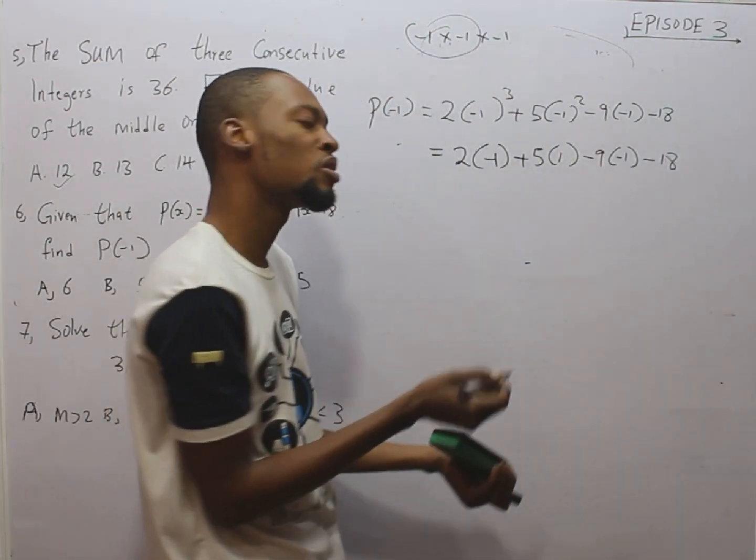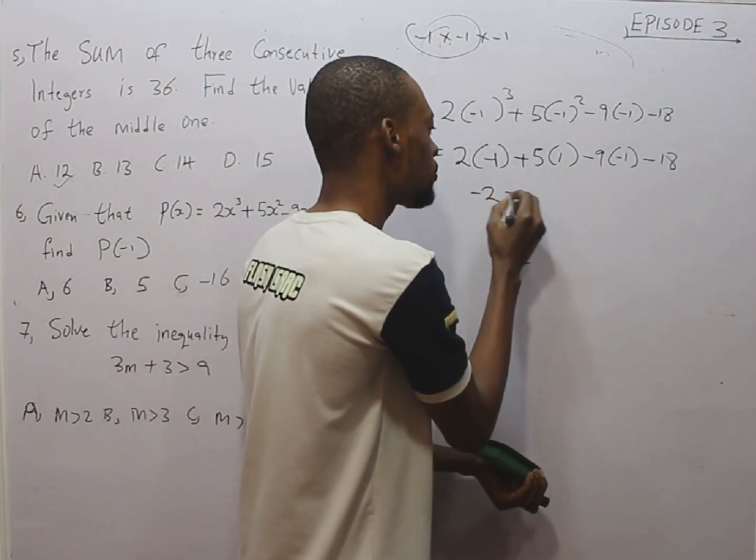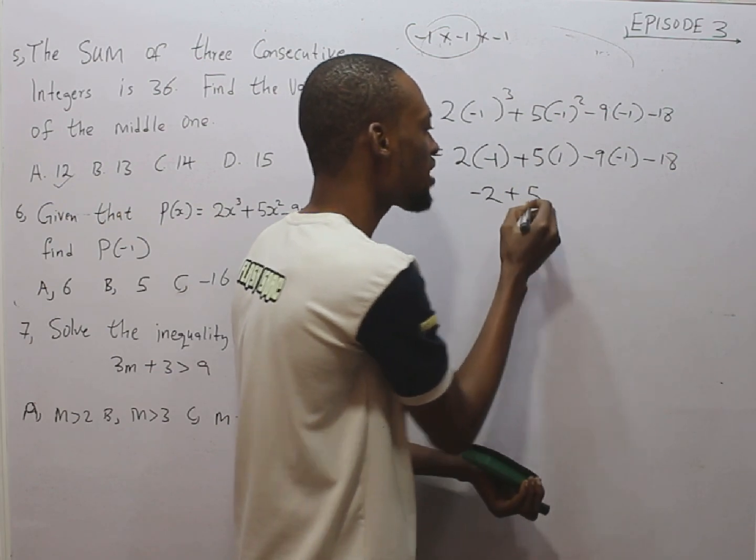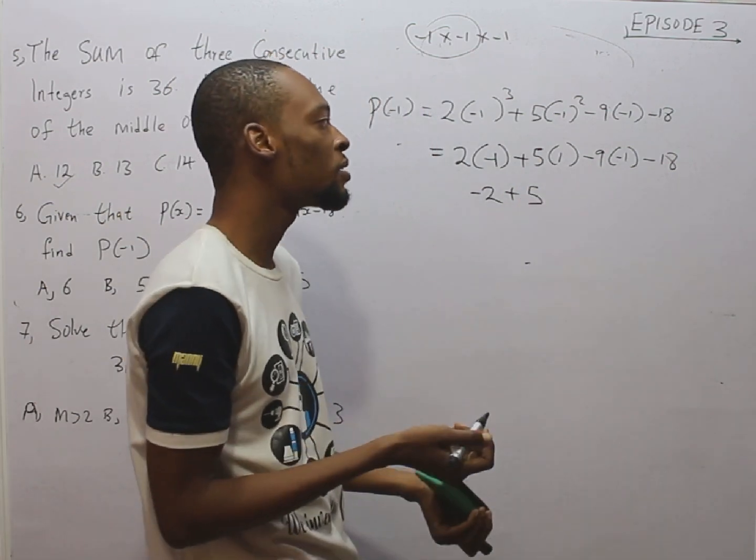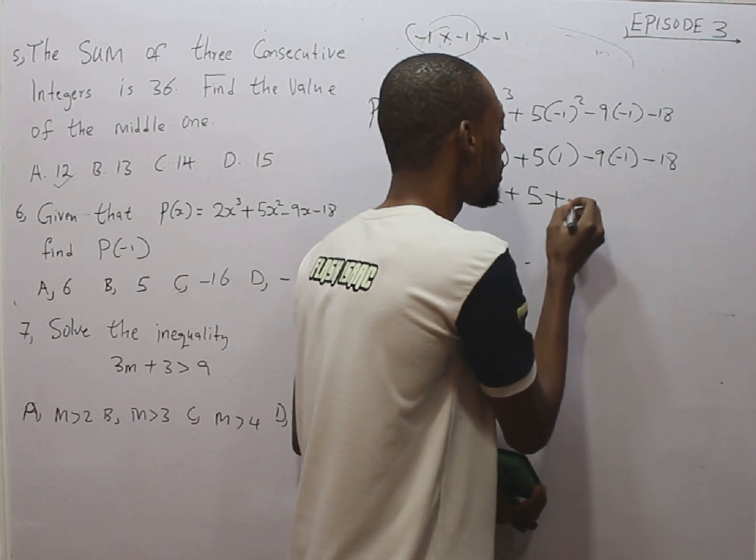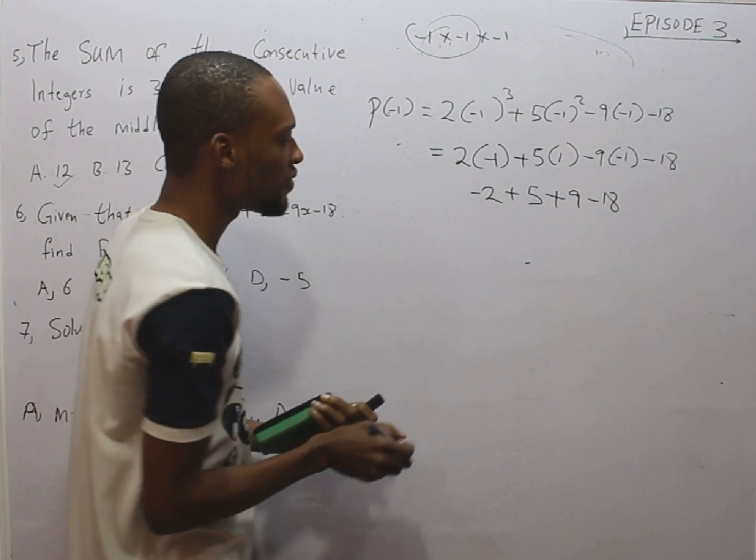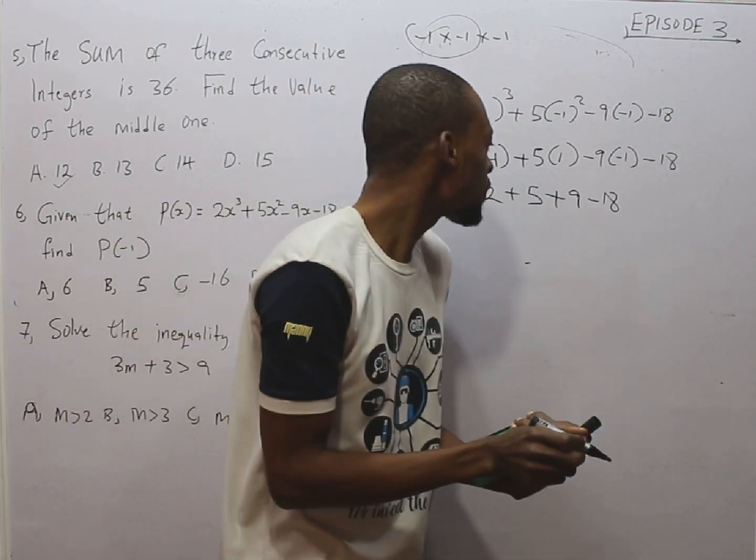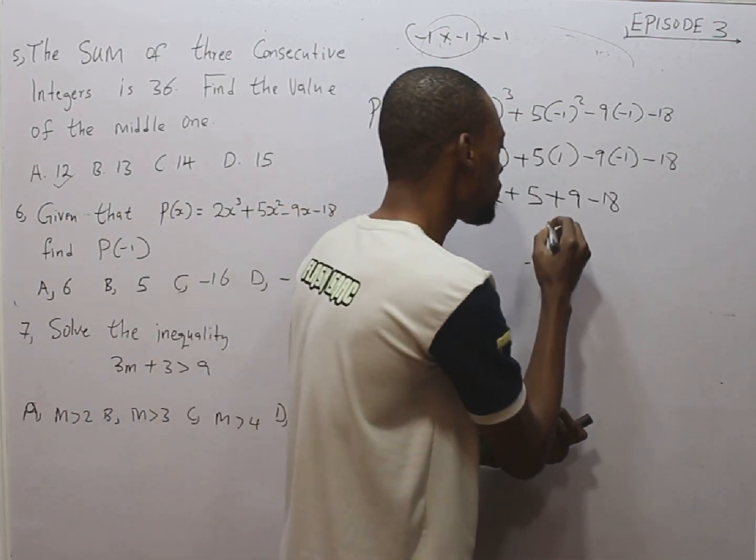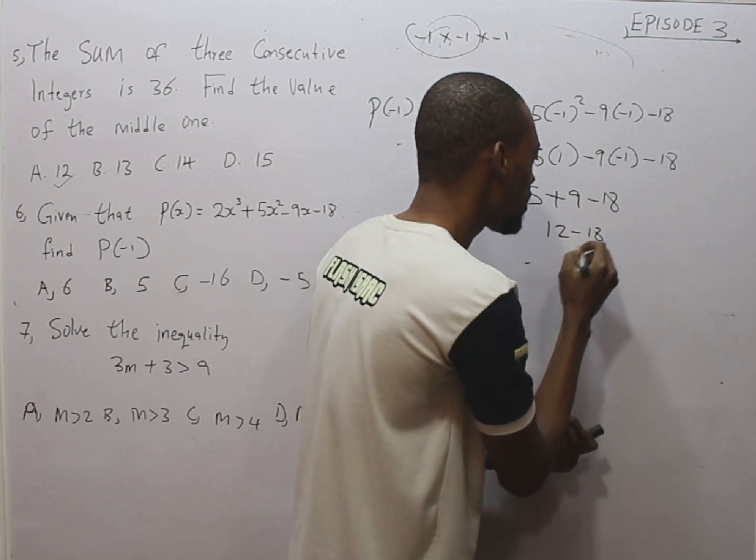So, this is 2 times minus 1 is minus 2, plus 5 times 1 is 5, minus 9 times minus 1, that is plus 9, minus 18. Minus 2 plus 5, that is 3. 3 plus 9, that is 12. So, we have 12 minus 18.